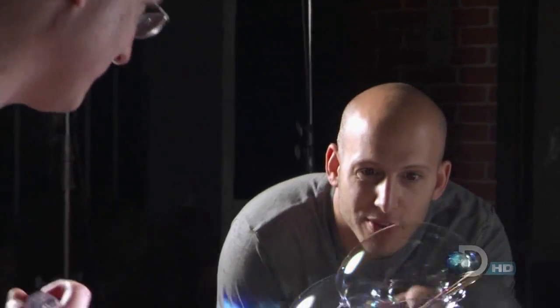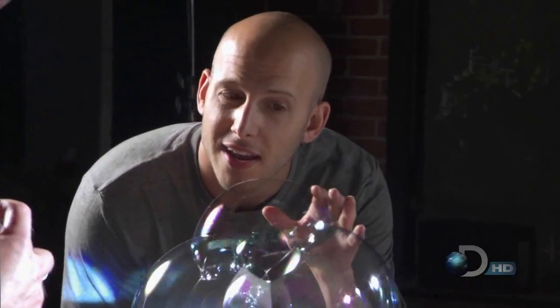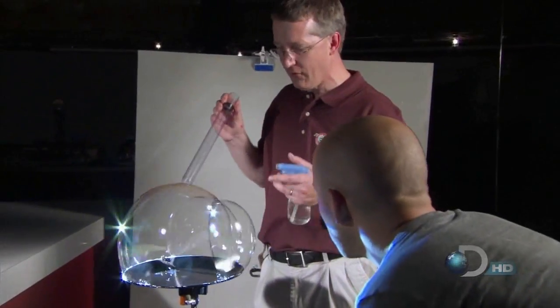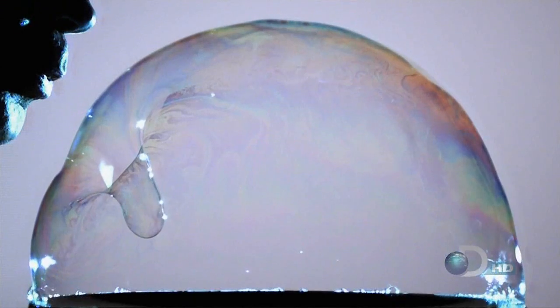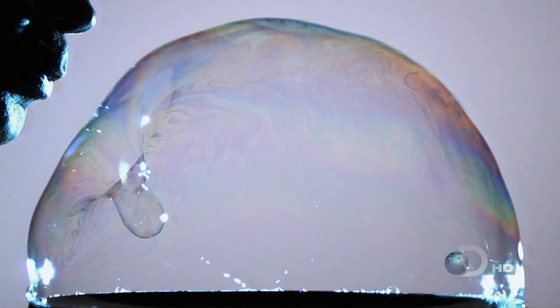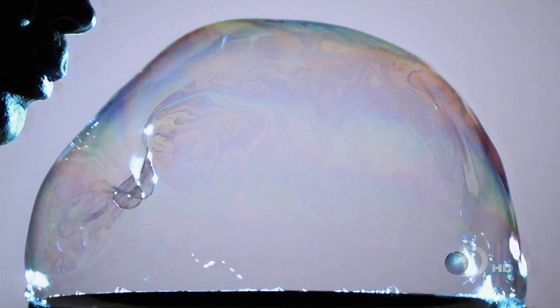The amazing thing to me is that when you look up close, it looks like bubbles are clear, but there's so much color going on. That is correct. It's every color of the rainbow. I like to think that the colors are a map showing you that the film is thick in some places and thinner in others.